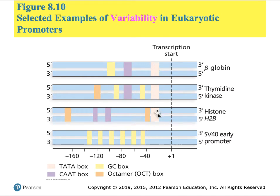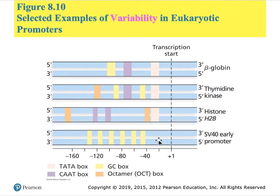Looking at a few genes commonly found in eukaryotes, some have the TATA box but not all of them. Many have the CAT box but not all, and some have them in different locations and repeating a different number of times. In some cases there is no TATA box, CAT box, or we have six GC boxes. Regardless, all these genes would be functional under the right conditions.